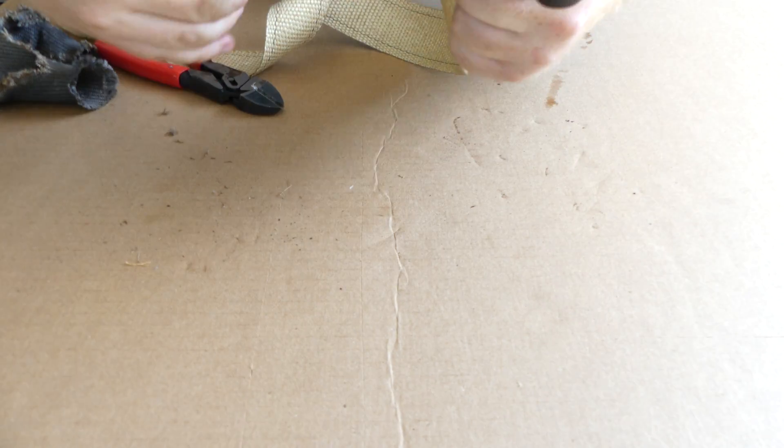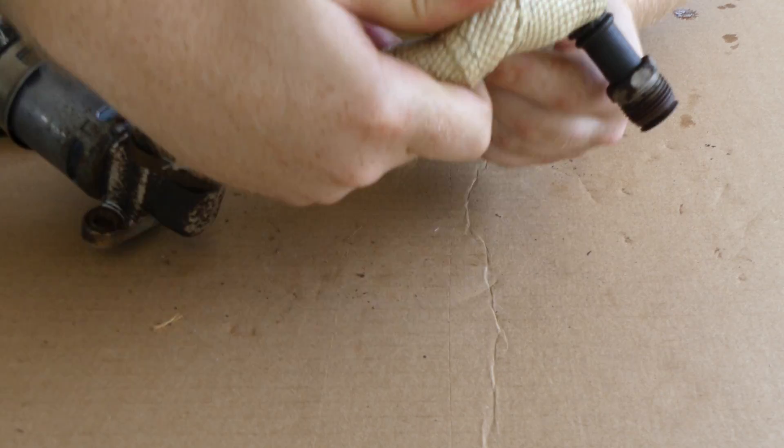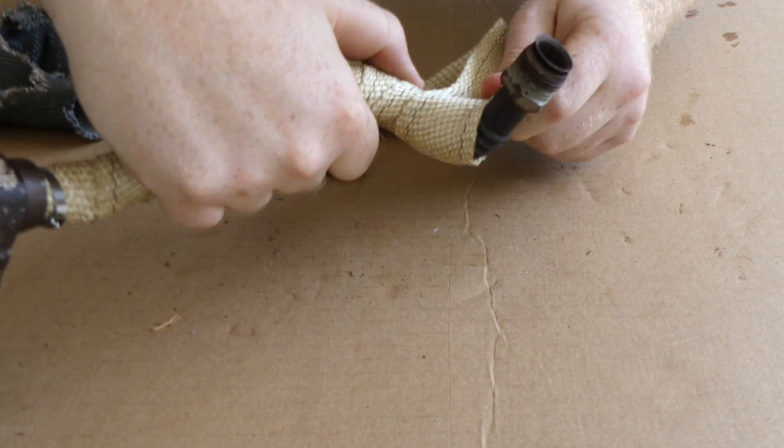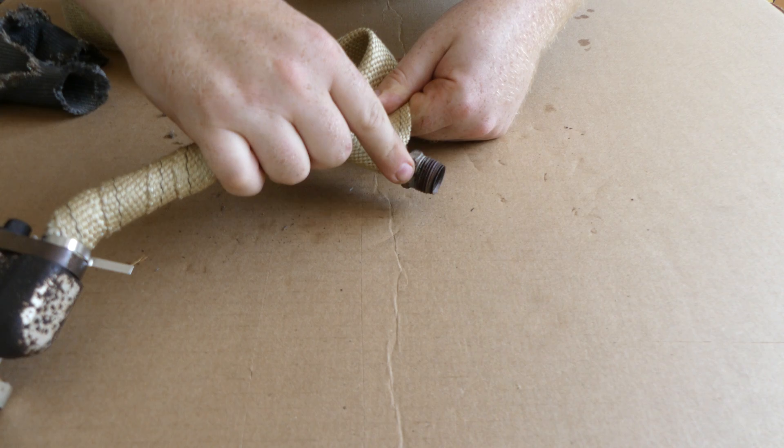One of the important things is to make sure this is tight. The tighter you get it, the better it seals. As you're wrapping it like this, pull on it to tighten it up. Now you don't want to go too far because you will need to get a wrench on this to tighten it down.